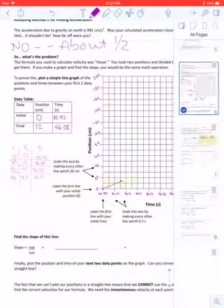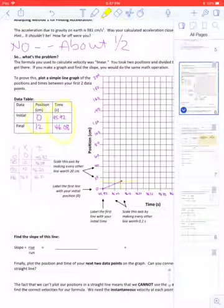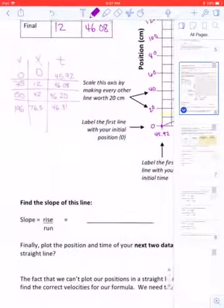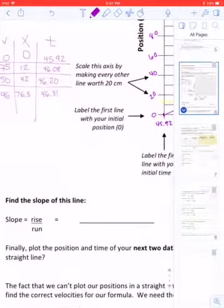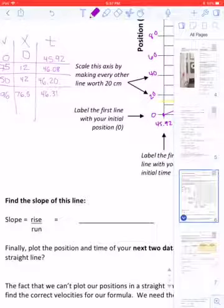To find the slope of that little line that we just drew, we do rise over run. Well, the rise is the difference in position, and the run is the difference in time. This should look familiar, because I just did this calculation on the second page of my data calculations.